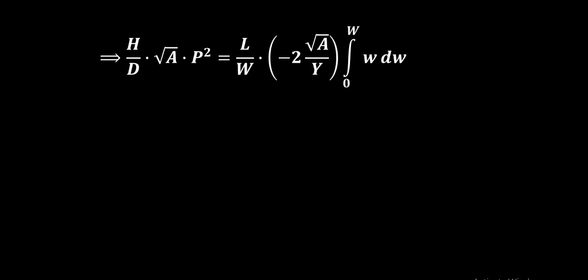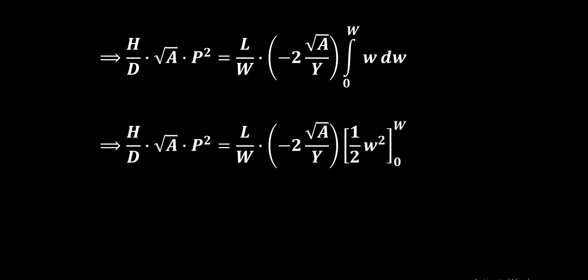That is same as H by D into root A into P square equal to L by W, minus 2 root A into Y will come out as, because A and Y are constant, so is root A and Y, and under the integration sign we have integral 0 to W, W dW.